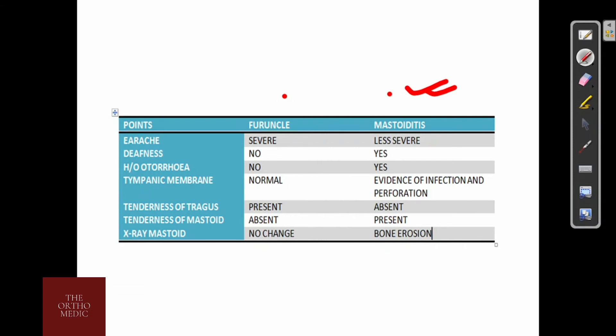To differentiate between a furuncle and mastoiditis: earache is severe in furunculosis but less severe in mastoiditis. There is no history of deafness in furunculosis, but there is a history of deafness in mastoiditis — though deafness can be present in the later stages of furunculosis if the furuncle occludes the lumen. There is no history of otorrhoea in mastoiditis.